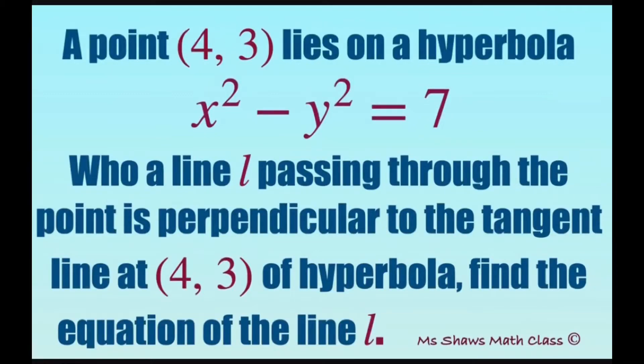Hi everyone. A point (4, 3) lies on a hyperbola x squared minus y squared equals 7. When a line L passing through the point is perpendicular to the tangent line at point of the hyperbola, we're going to find the equation of the line.